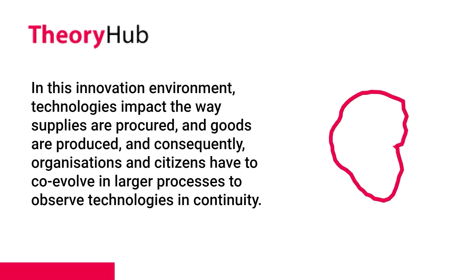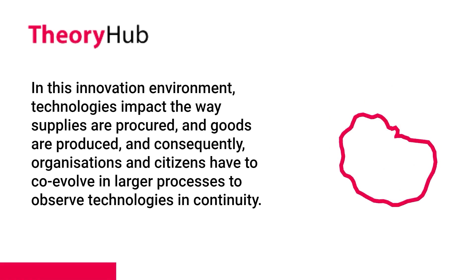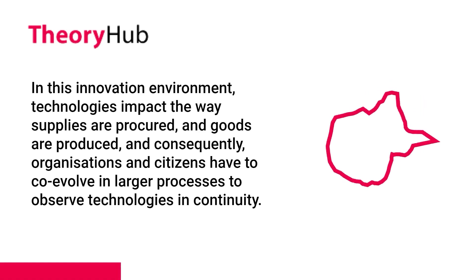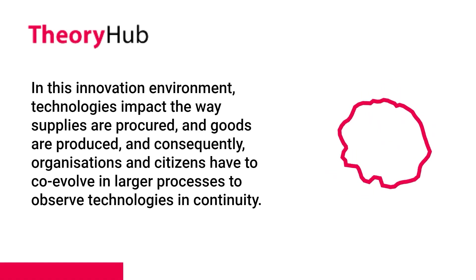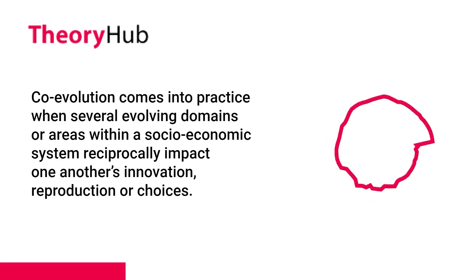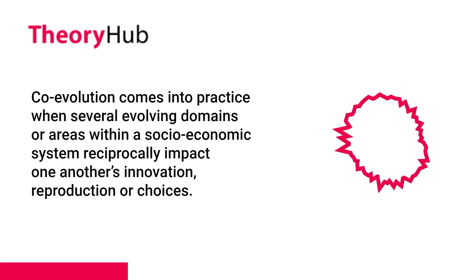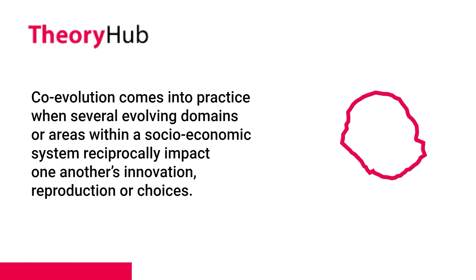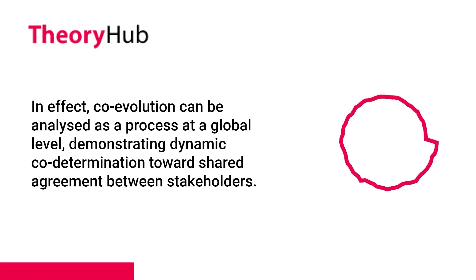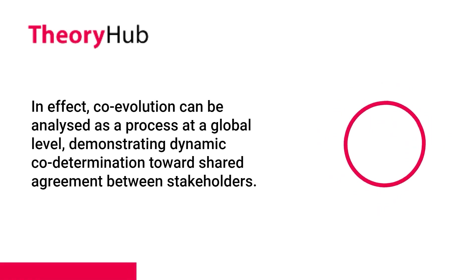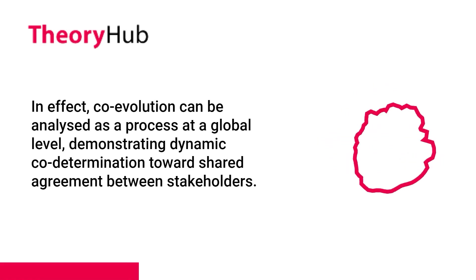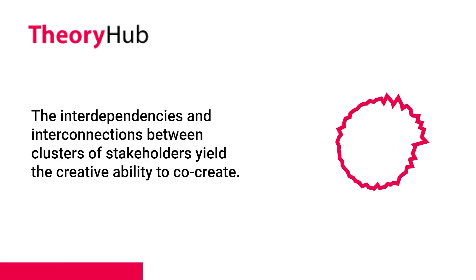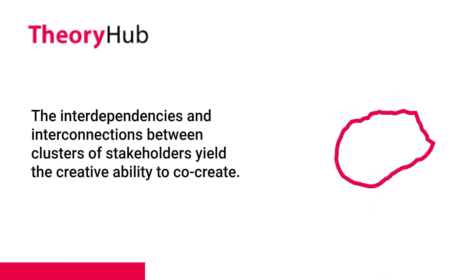In this innovation environment, technologies impact the way supplies are procured, goods are produced, and consequently organizations and citizens have to co-evolve in larger processes to observe technologies in continuity. Co-evolution comes into practice when several evolving domains or areas within a socio-economic system reciprocally impact one another's innovation, reproduction, or choices. Co-evolution can be analyzed as a process at a global level, demonstrating dynamic co-determination toward shared agreement between stakeholders. The interdependencies and interconnections between clusters of stakeholders yield the creative ability to co-create.